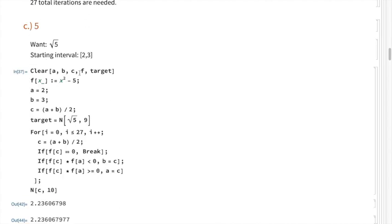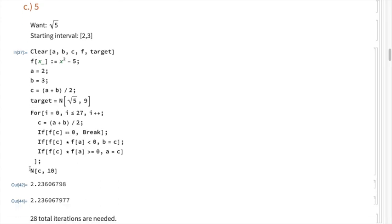Problem c: we want the square root of 5. In this case we change our starting interval to between 2 and 3, since 2² = 4 which is less than 5. Using this new starting interval, we define the function, variables for the interval, a third variable for the midpoint, redefine the target, and modify the code accordingly. Evaluating to 10 digits of precision, we find that 28 total iterations are needed.